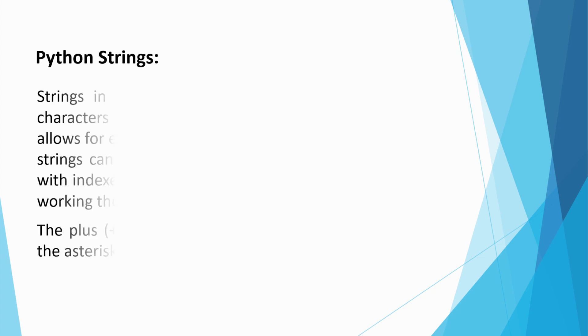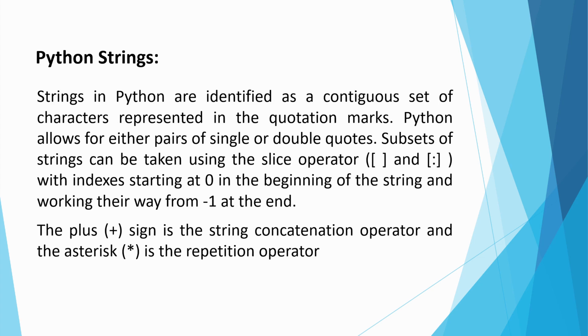Strings in python are identified as contiguous set of characters represented in quotation marks. Python allows for either pairs of single or double quotes. Subsets of string can be taken using the slice operator with indexes starting at 0 in the beginning of the string and working their way to minus 1 at the end. The plus sign is the string concatenation operator and the asterisk is the repetition operator.